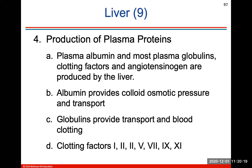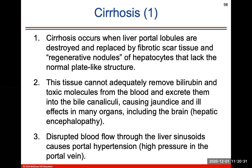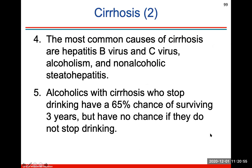The liver is important in creating different types of plasma proteins. Cirrhosis occurs when liver lobules are destroyed and replaced by fibrotic scar tissue that lacks normal plate-like structure. This tissue cannot adequately remove bilirubin and other toxic molecules, causing jaundice and ill effects in many organs like the brain. Disrupted blood flow through the liver's sinusoids causes portal hypertension, meaning high pressure in the portal vein. The most common causes of cirrhosis are hepatitis B and C virus, alcoholism, and non-alcoholic steatohepatitis. Alcoholics with cirrhosis who stop drinking right away have a 65% chance of surviving three years.